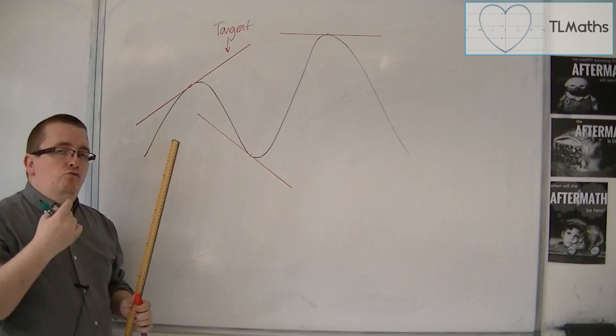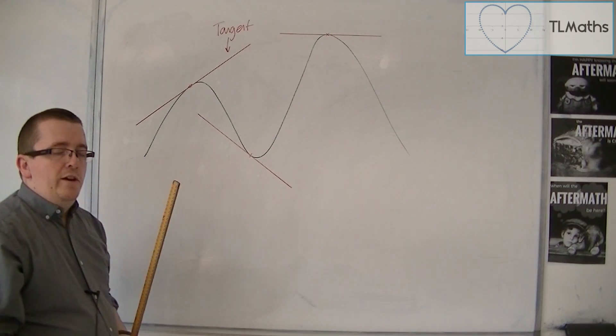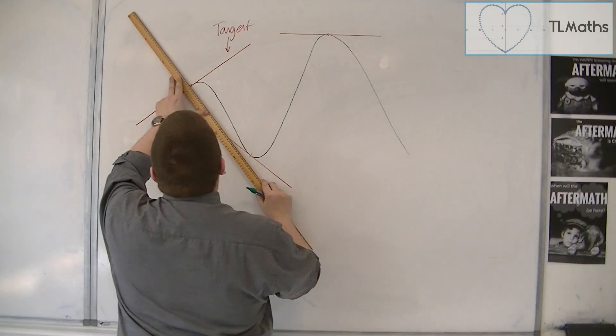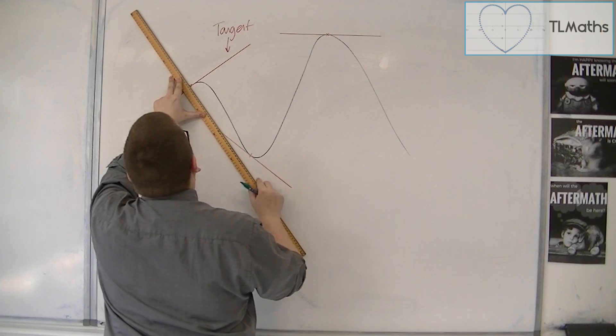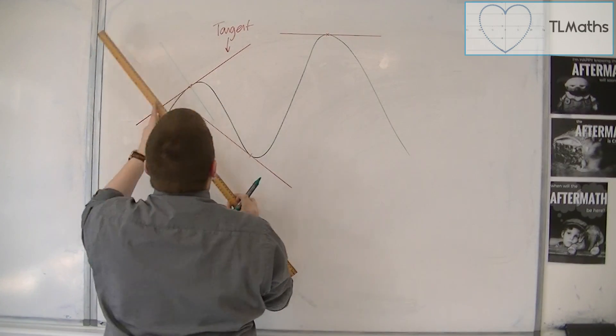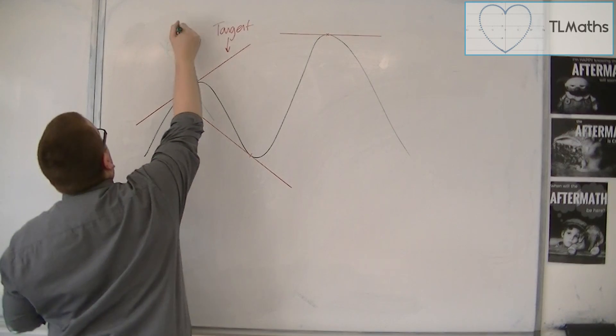Now, at right angles to the tangent line is what is called a normal line. So a normal sits at right angles to the tangent. So this is a normal.